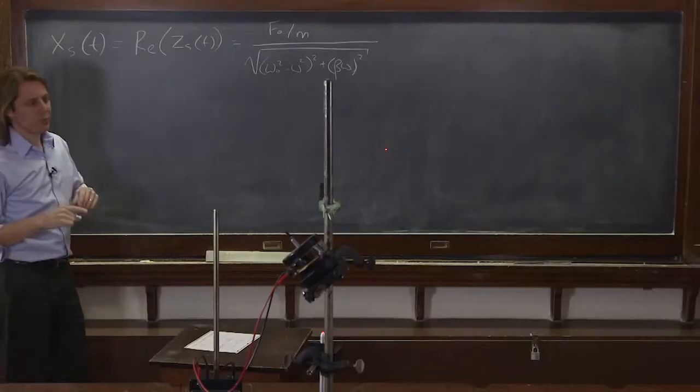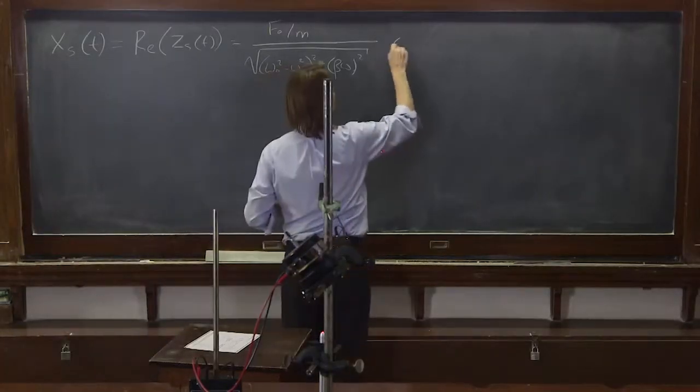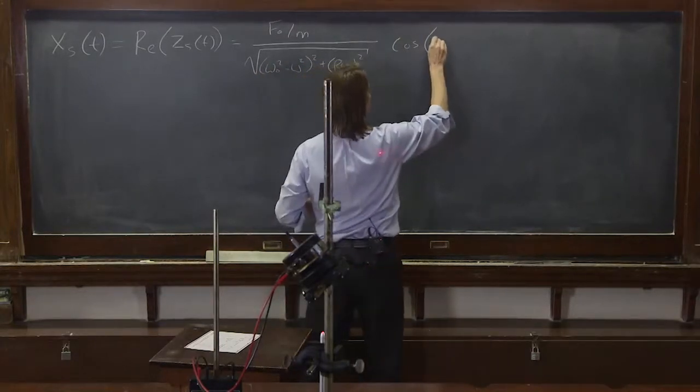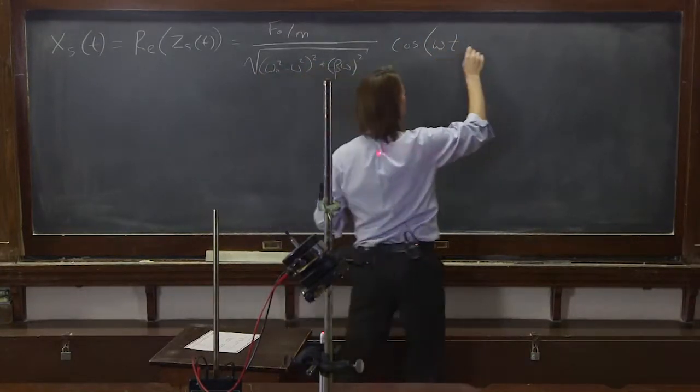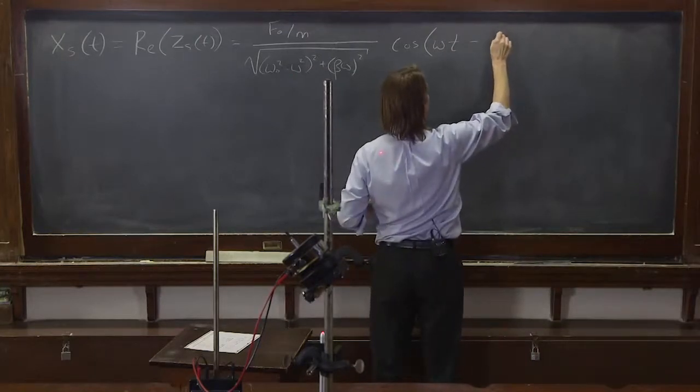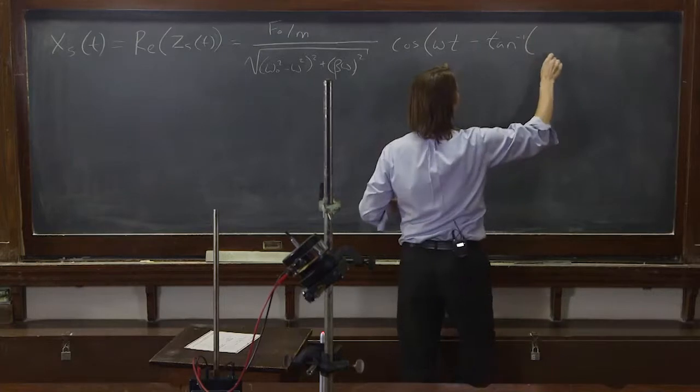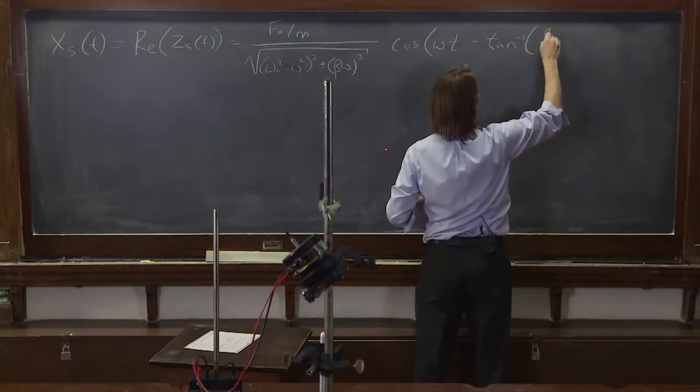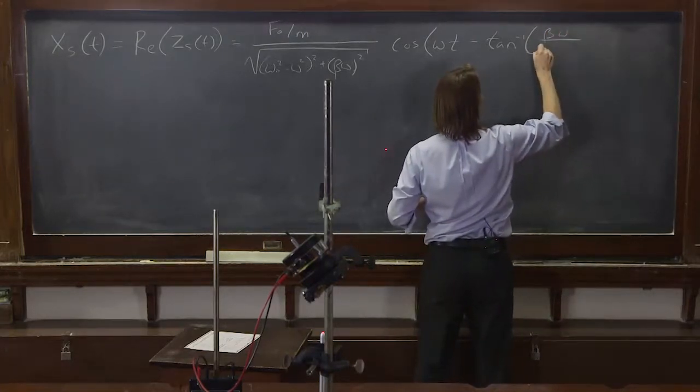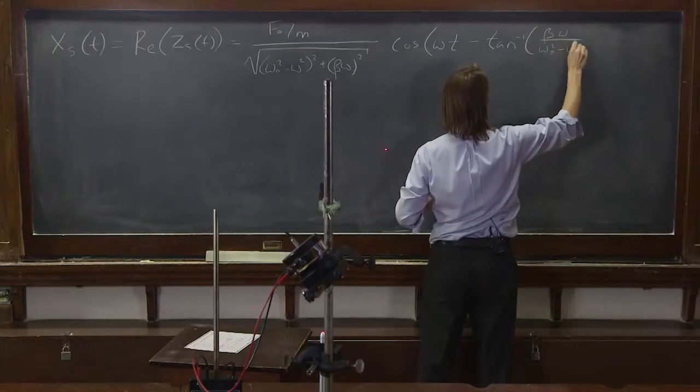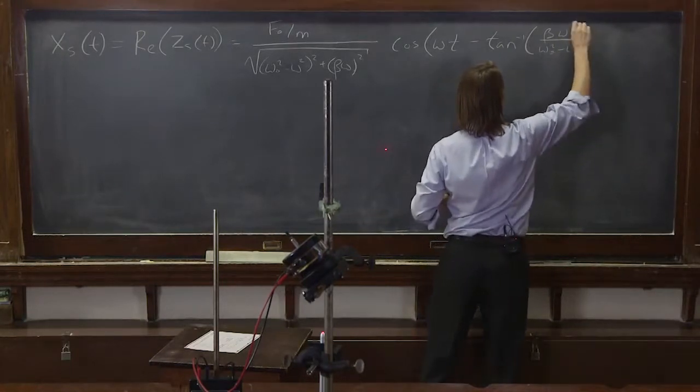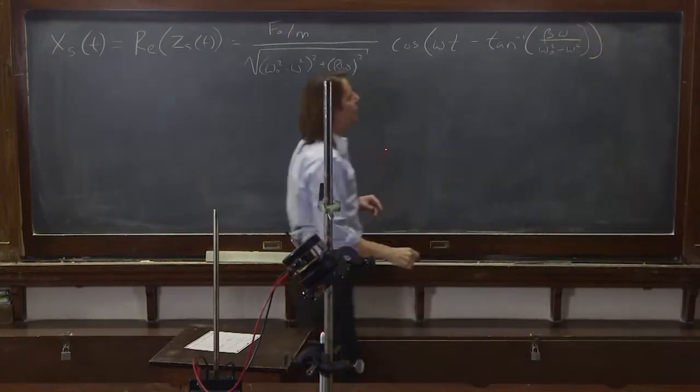And then to get the real part, it's the cosine of omega t, that's just the drive frequency, minus the delta steady state is inverse tangent of, oh, I believe it was beta omega over omega naught squared minus omega squared. Multiple close parentheses.